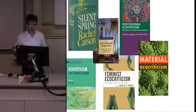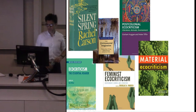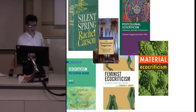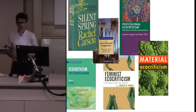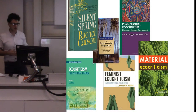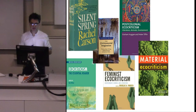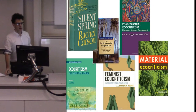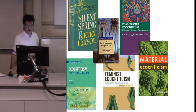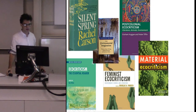Looking at the field, a lot of people trace ecocriticism back to 1962 with Rachel Carson's Silent Spring, seen as a seminal text. 1978 is often given as the year ecocriticism appears as an actual expression — William Rueckert coined it — but it lay dormant until the 90s. After that it gathered pace, with names like Lawrence Buell and The Environmental Imagination. The field then opened up to include post-colonial ecocriticism, feminist ecocriticism, material ecocriticism, and so forth.